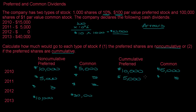When doing cumulative, I like to keep track in parentheses of the amount owed to the preferred shareholders. In 2011, because we only paid them $5,000, they're owed another $5,000 — so we have $5,000 in arrears. In 2012, preferred gets zero and common gets zero. Now preferred shareholders are owed $5,000 from 2011 plus another $10,000 from 2012 — a total of $15,000 in arrears.